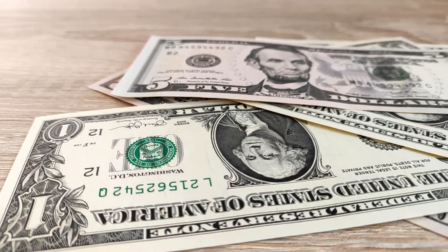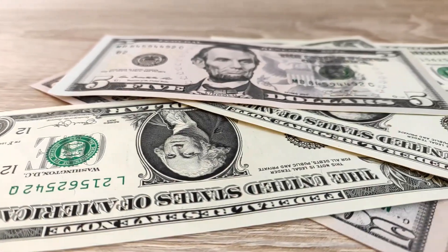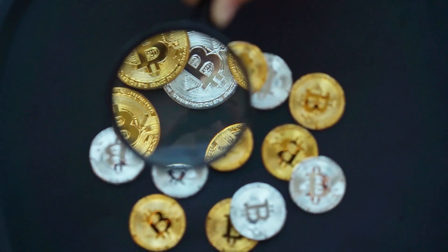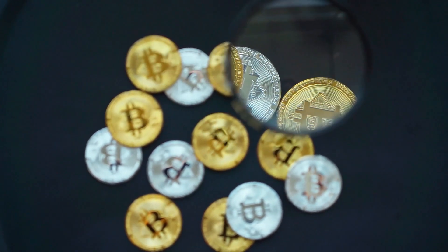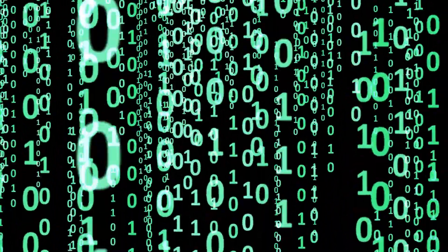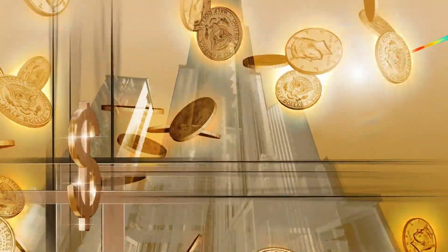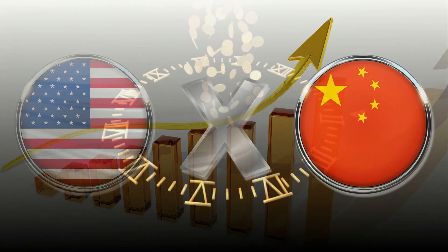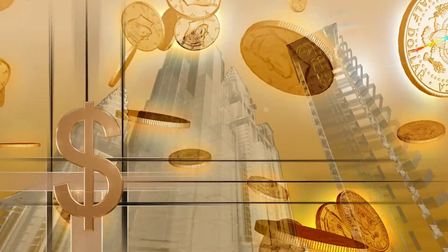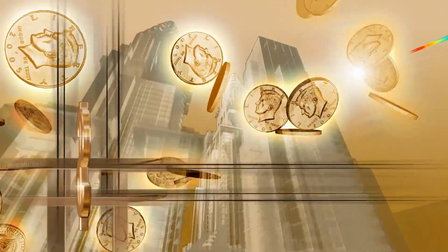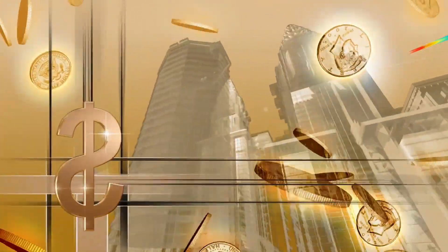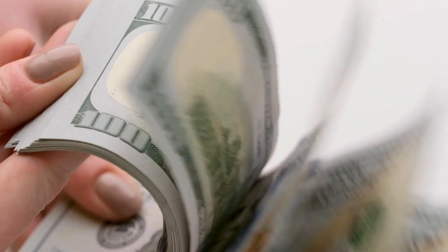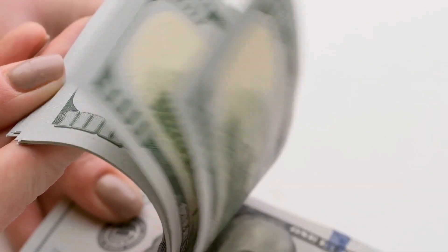To sum up, money has a rich and intricate past that has progressed over time, from commodity money to digital currency. Its significance in the advancement of societies and economies has been critical. Money is used for various purposes, such as enabling trade and commerce, storing wealth, and financing extensive projects. As technology advances, the function of money will continue to evolve, and new forms of currency will arise.